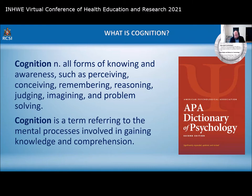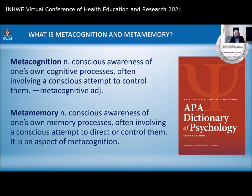Cognition is a term referring to the mental processes involved in gaining knowledge and comprehension. It's all about thinking — we're engaging in cognition right now. All of these different terms are associated with cognition: knowing, awareness, perceiving, conceiving, remembering, and so on.